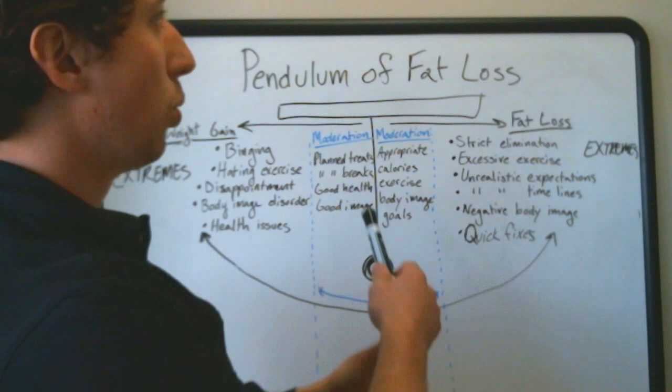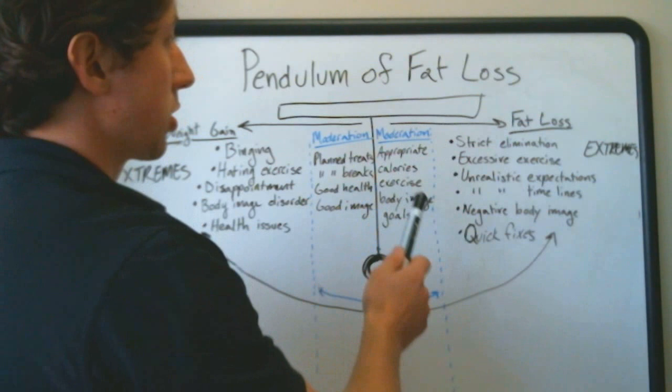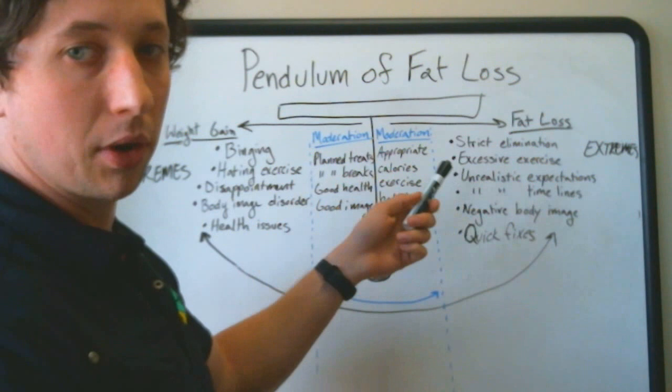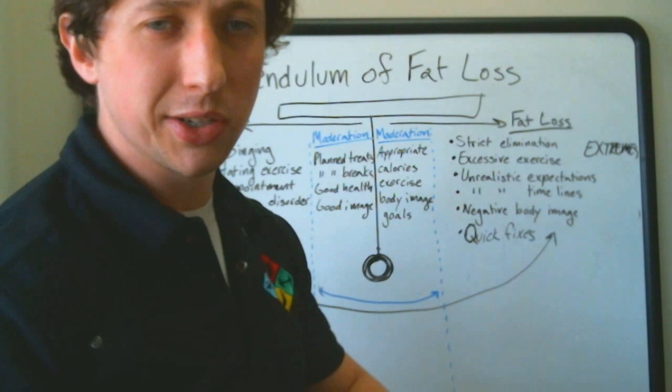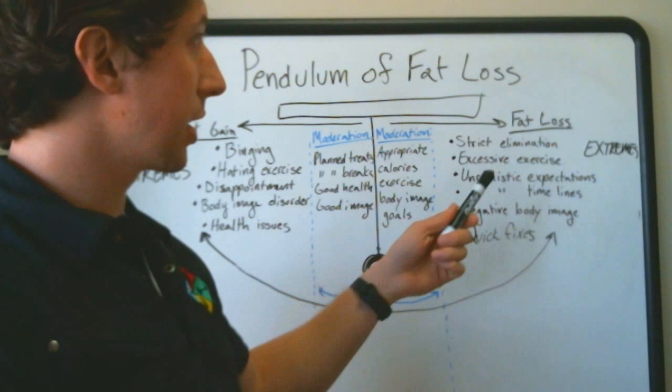Let's talk about the goal that most of us want, which is fat loss. What do we most often find ourselves doing that never works? First is strict elimination. We're removing entire food groups, maybe trying to cut carbs all out together. That's an extreme. Excessive exercise. We go from not exercising at all to trying to set a goal of like six or seven days a week for an hour. That's another extreme.